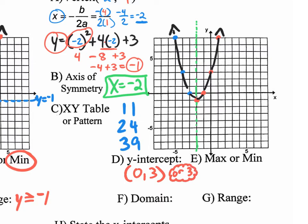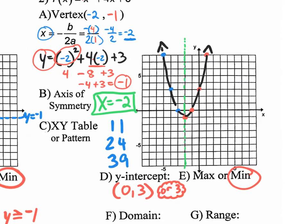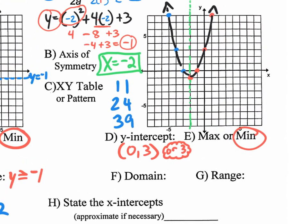Now the max or min — we already know that the max or min is the vertex. All you have to do is identify whether it is a max or a min value. Let's circle minimum. The minimum value is the y value of negative 1, or you could state the vertex negative 2, negative 1. Now the domain: x equals all real numbers. The range: the lowest point is the minimum value of y equals negative 1, and it's all above that. So y is greater than or equal to negative 1.